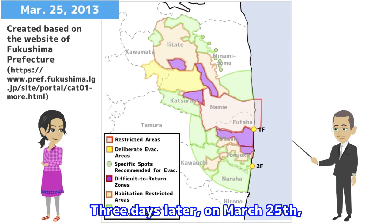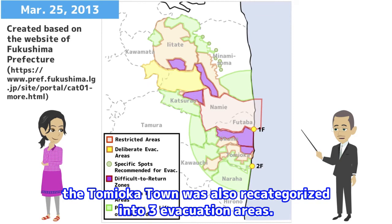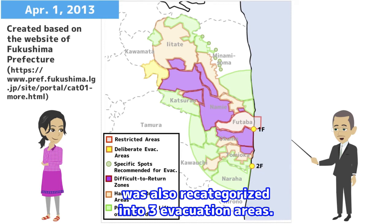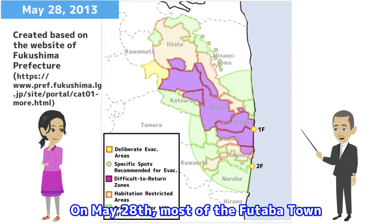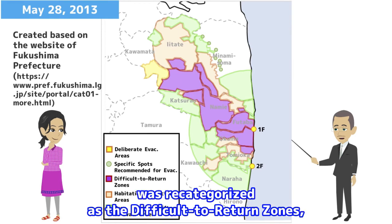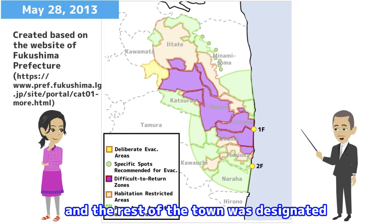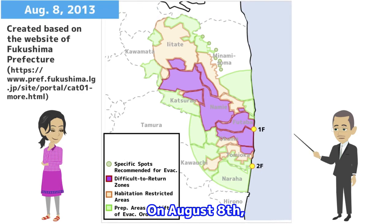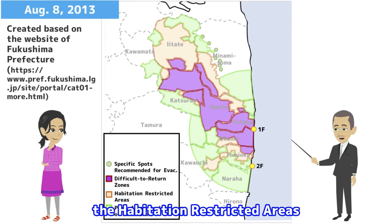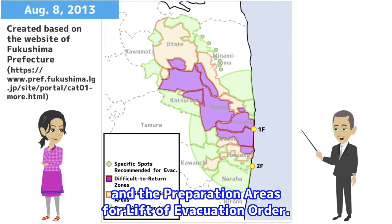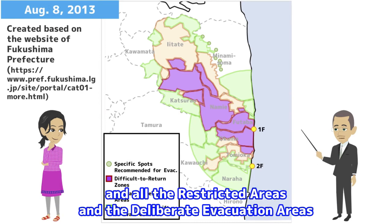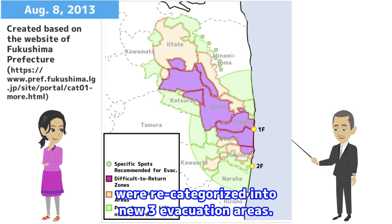Three days later, on March 25, Tomioka town was also re-categorized into three evacuation areas. On May 28, most of Futaba town was re-categorized as the difficult-to-return zones, and the rest of the town was designated as the preparation areas for lift of evacuation order. On August 8, Kawauchi town was re-categorized into the habitation restricted areas and the preparation areas for lift of evacuation order. The reorganization process was completed and all the restricted areas and the deliberate evacuation areas were re-categorized into the new three evacuation areas.